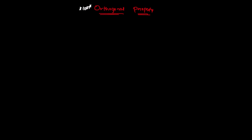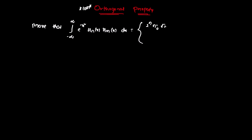So, what is orthogonal property? Prove that: the integral from minus infinity to infinity of e to the power of minus x squared, into H_n(x) into H_m(x) dx. This is called the Hermite orthogonal property, where the indices change from n and m.